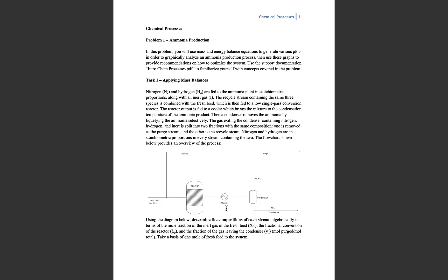Then the gas exiting the condenser is split into two fractions with the same composition. One is removed as a purge stream and the other as a recycled stream. As we see here, N2, H2, and the inert gas are combined and fed to a reactor. It is then cooled, passed through a condenser, and two streams go back.